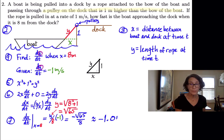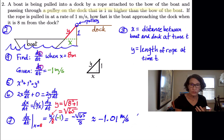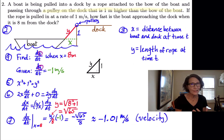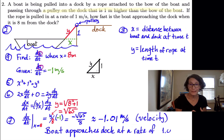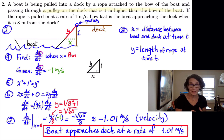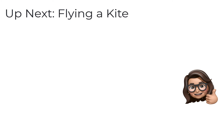In our calculator, that's approximately negative 1.01 meters per second. This is negative because it's a decreasing function — this is actually the velocity of the boat. But the question asks how fast the boat is approaching the dock, which means they want speed. So remember to answer the question the way they're phrasing it. The boat is approaching the dock at a rate of positive 1.01 meters per second. That's the speed of the boat. I'll see you in the third example, when we'll fly a kite.